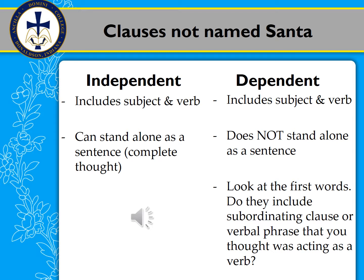Just like the words would indicate, an independent clause can act on its own — just like an independent person could act on his or her own — whereas a dependent clause wouldn't be quite so much that way. Both include a subject and a verb, since that's what defines a clause. The actual difference is that an independent clause can stand alone as a sentence — it's a complete thought — and you can see a definition of that on page 378 in A Writer's Reference. A dependent clause does not stand alone as a sentence. Usually, you can tell by looking at the first words: do they include a subordinating conjunction or a verbal phrase that you thought was acting as a verb? If you think you have a complete sentence and it's not, usually one of those two things is the case. Stay tuned — we'll talk about them next.